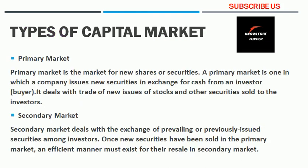There are two types of capital market: the primary market and the secondary market. The primary market is where new shares or securities are issued. A company issues new securities in exchange for cash from an investor or buyer. It deals with the trade of new issues of stocks and other securities sold to investors.